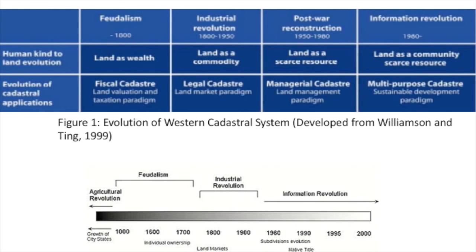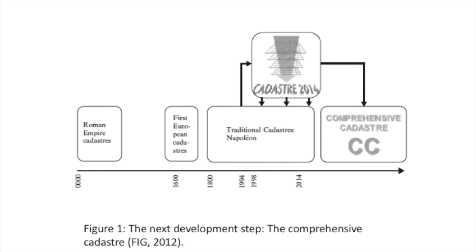In the 1980s era, land took on a multi-purpose role during the information revolution. Land was treated as a community resource, valuable to the community, and used for multiple purposes — not only legal or fiscal, but also for development, infrastructure management, and sustainable development. This progression can also be seen in the graph below.